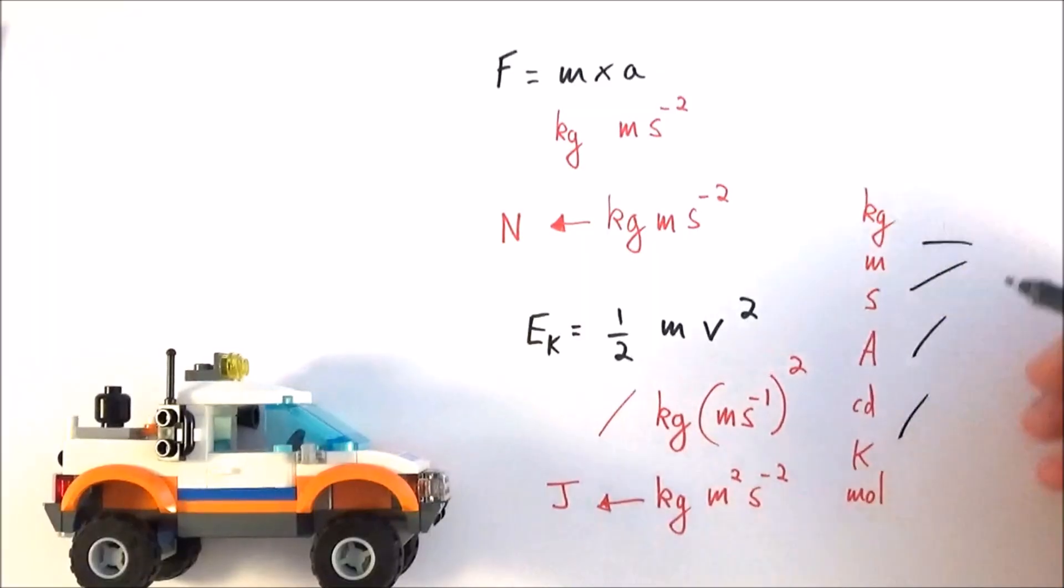We can use combinations of these to give us things like the coulomb, the volt, perhaps the resistivity, or even the resistance or the density of an object.